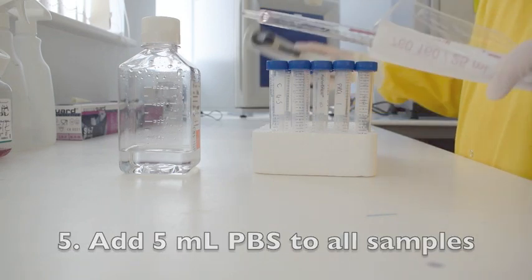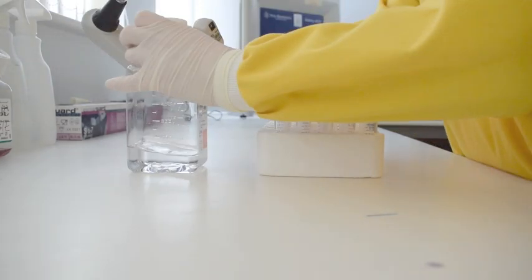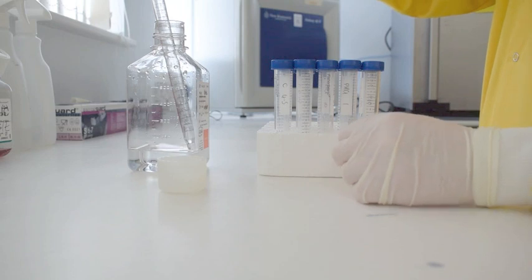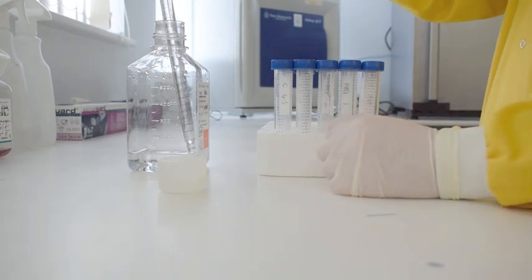5 milliliters of PBS or phosphate buffered saline is added to each cell culture. This allows washing of the cell cultures and removal of any excess medium.